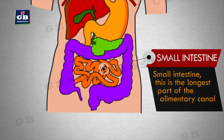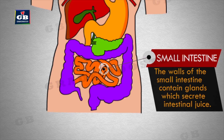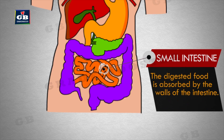The small intestine is the longest part of the alimentary canal, fitted into a compact space because of extensive coiling. It is the site of complete digestion of carbohydrates, proteins, and fats. The secretions of the liver, pancreas, and intestinal wall help to complete the digestion. The walls of the small intestine contain glands which secrete intestinal juice. The enzymes present in the intestinal juice convert proteins to amino acids, complex carbohydrates into glucose, and fats into fatty acids and glycerol.